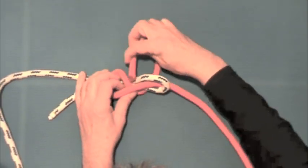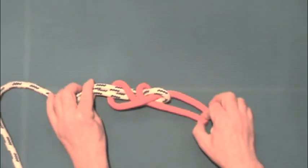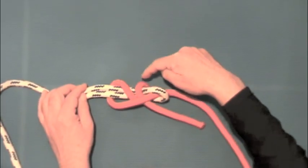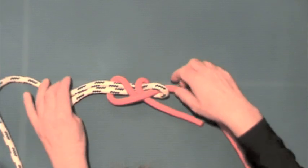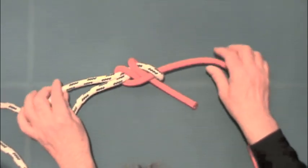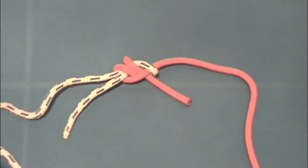We continue on and do the same. Again, slide it around and underneath, and that creates a double sheet bend. Pull it tight, and there's our knot. Double sheet bend.